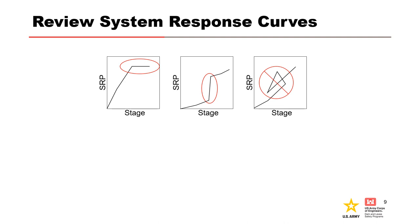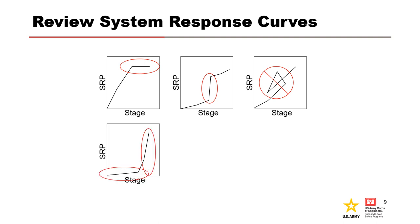This example cannot happen. Probabilities must be monotonically increasing in general. This is an example of a brittle system with a threshold stage where performance changes dramatically. Are sufficient points defined over small but critical ranges of stages?